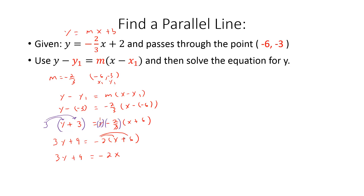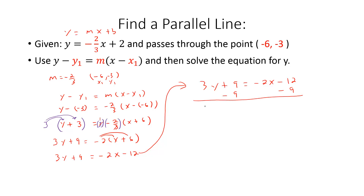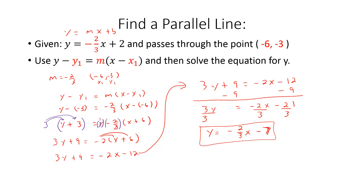Applying the distributive property: negative 2 times x is negative 2x, and negative 2 times positive 6 is minus 12. Now solving for y: subtract 9 from each side, then divide everything by 3. This gives us y equals negative two-thirds x minus 7. The slope is the same as the original line's slope of negative two-thirds, confirming this line is parallel to the given line.